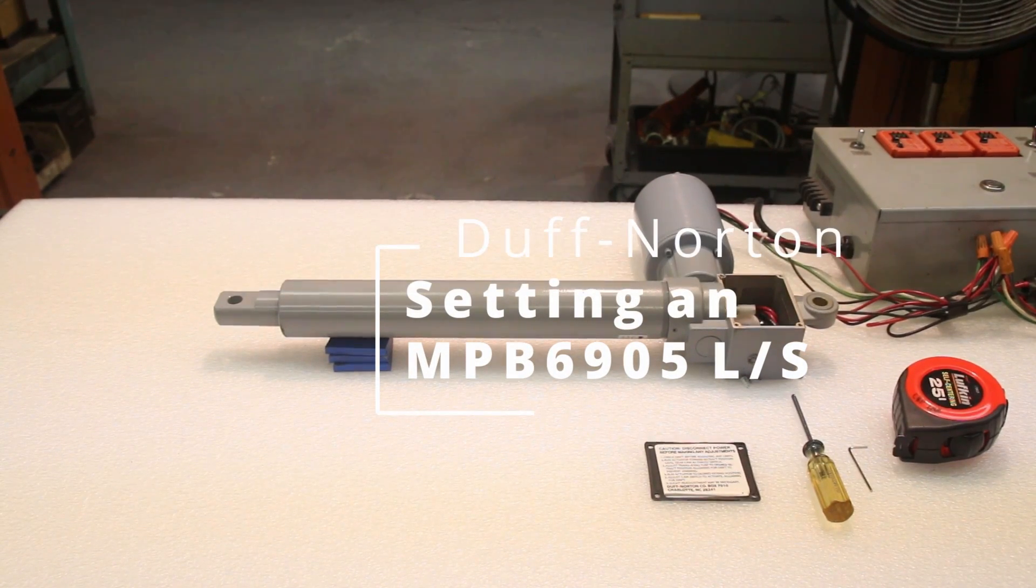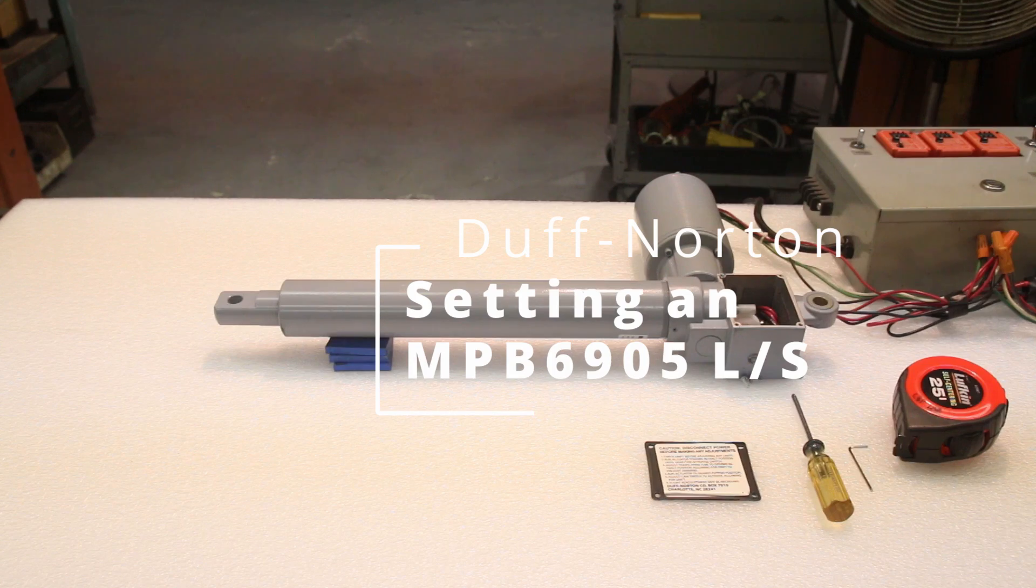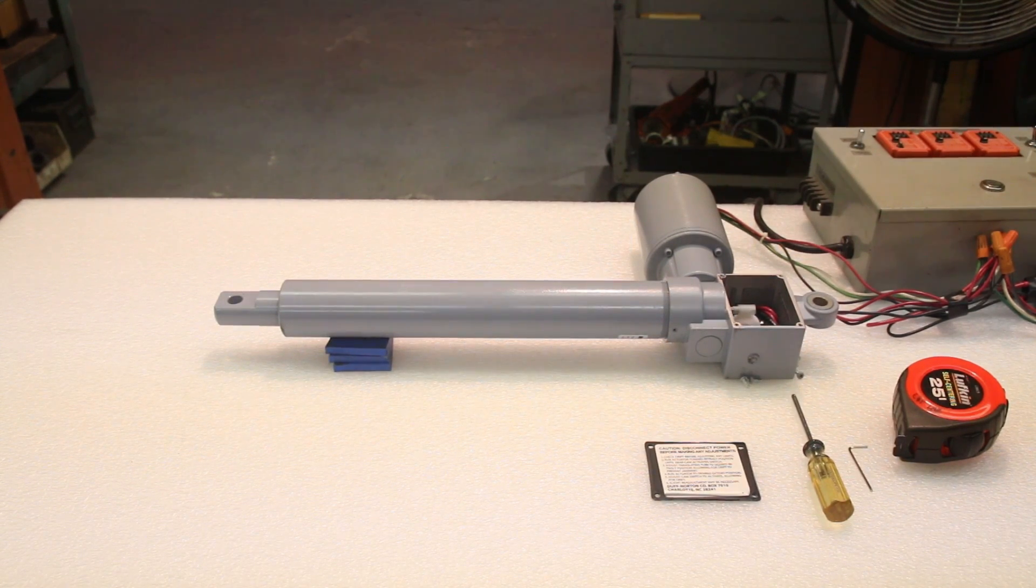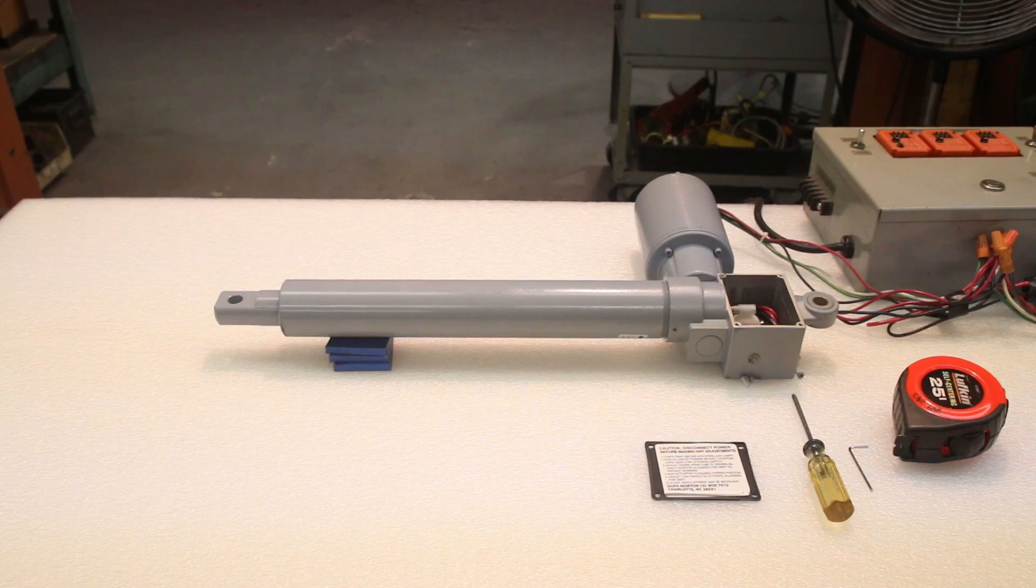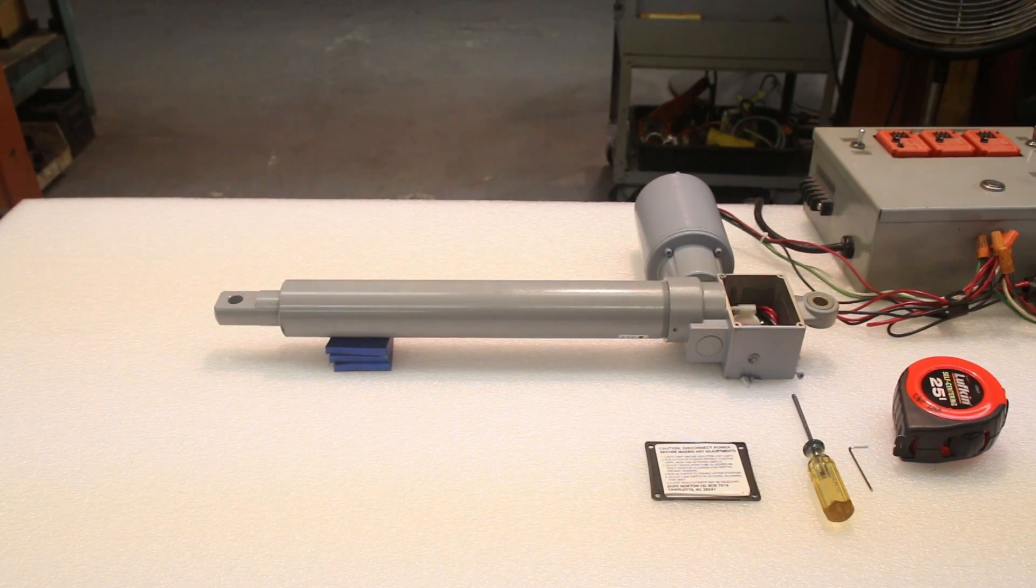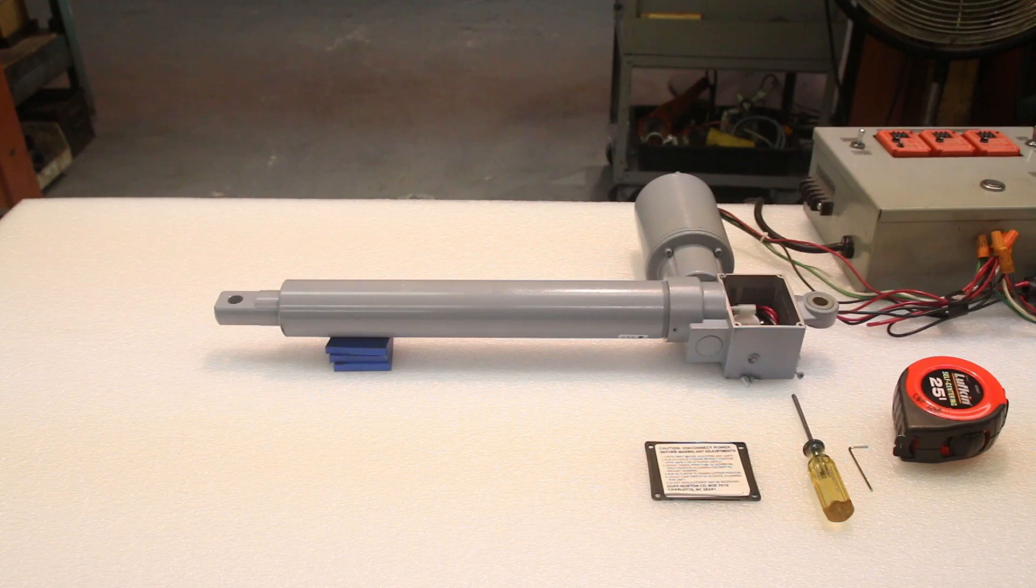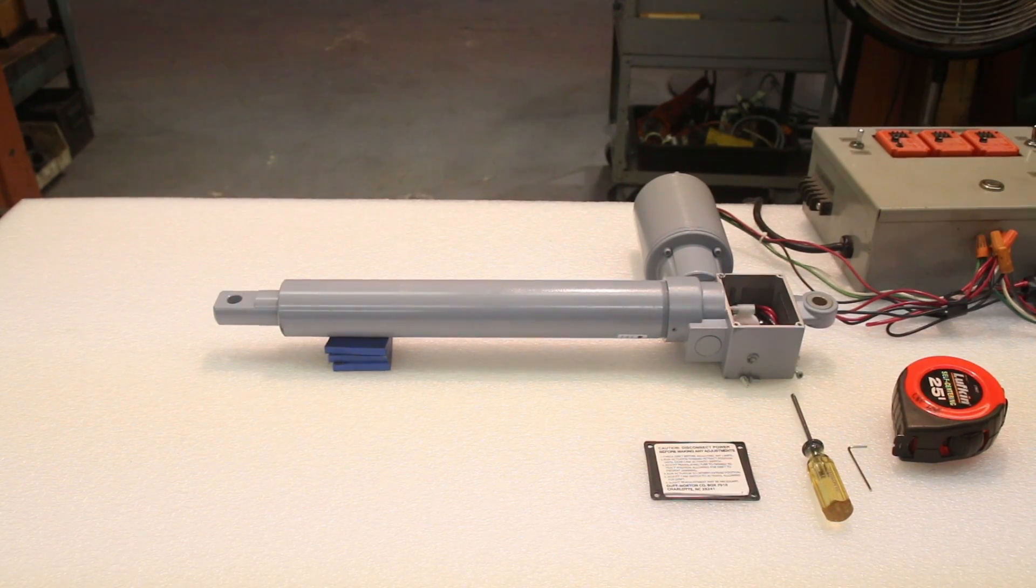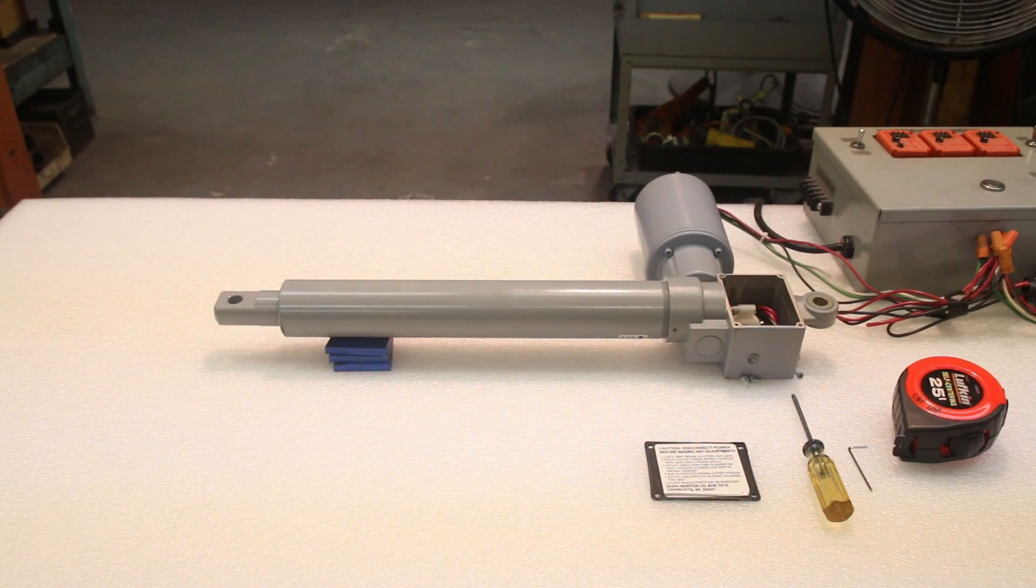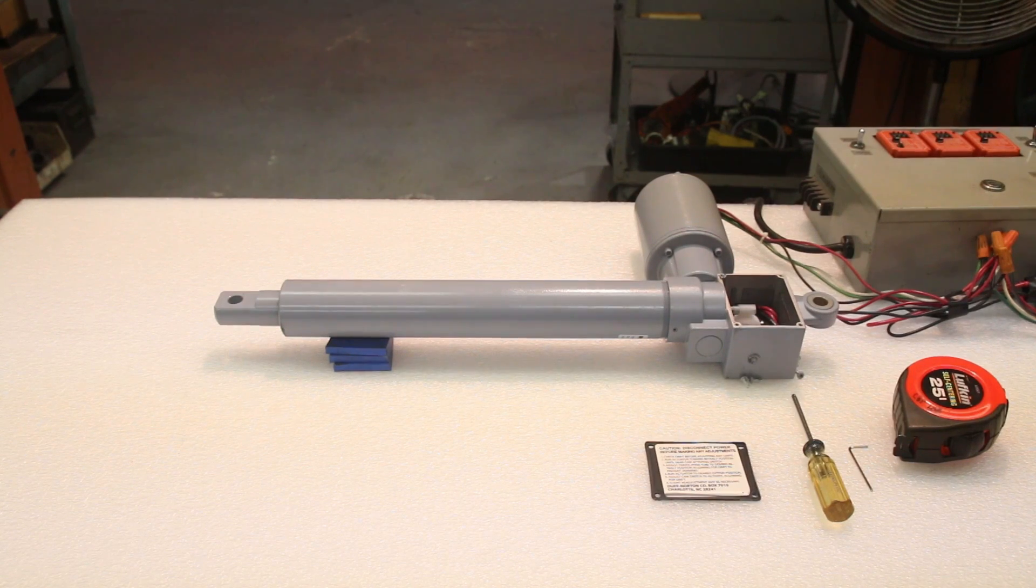The following instructions are for limit switch cam adjustment on a Duff Norton MPB6905 mini-pack actuator, as shown. The procedure for adjusting these switches can be found on page 5 of the maintenance manual supplied with each actuator. This procedure is also found inside the limit switch housing cover.